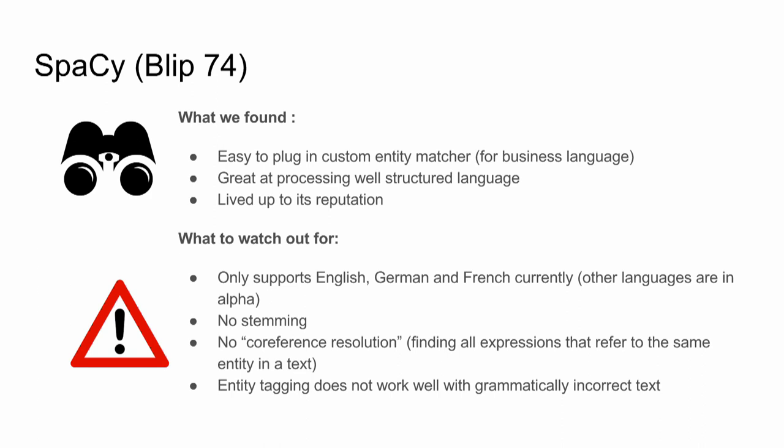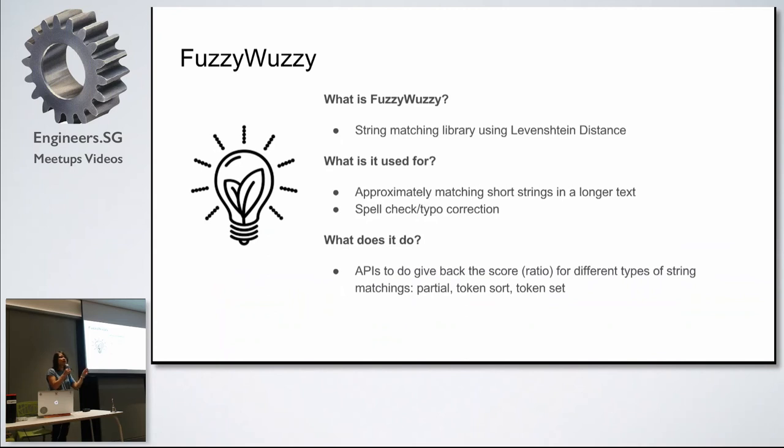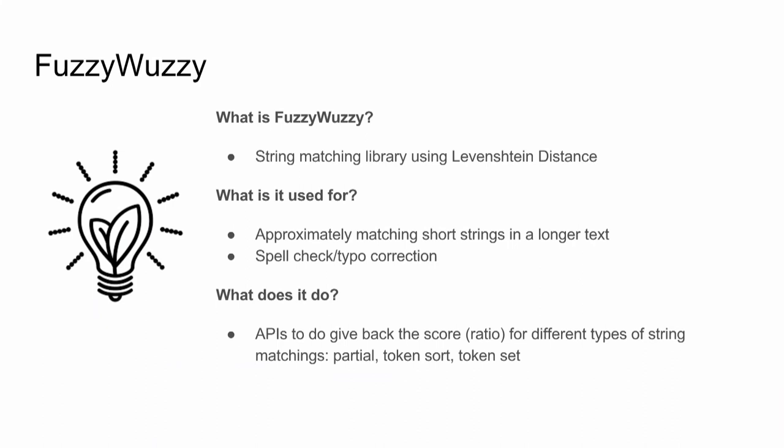Talking about string matching: the other thing we needed for our search engine was that when users type in something that's ambiguous, matches multiple words, or they misspell something, we need to correct it and do approximate matching. This is why we use FuzzyWuzzy. Although the name is a bit funny, it's actually a really good library. It uses Levenshtein distance, which is basically the number of changes you need to make to one string to make it match the other. For example, the Levenshtein distance between 'cake' and 'take' is one, because you need to change the T for the C. It's used for approximate matching of short strings, spell check, and typo correction.